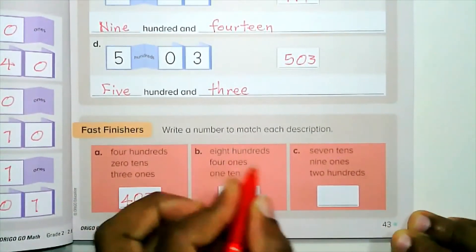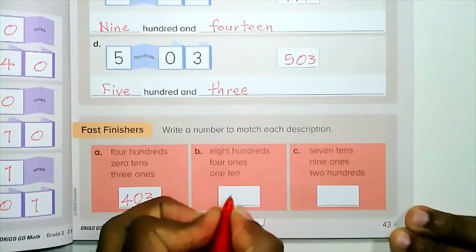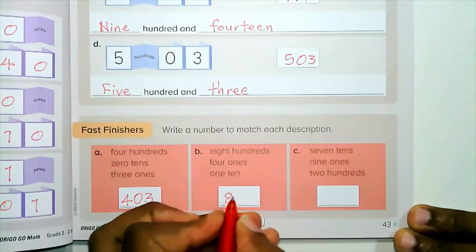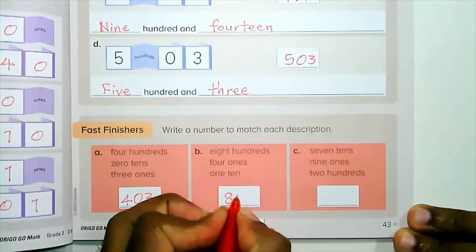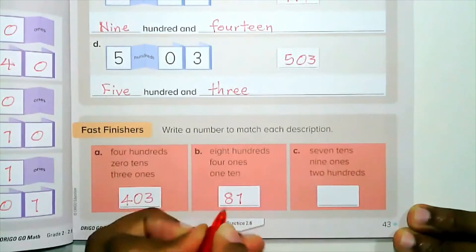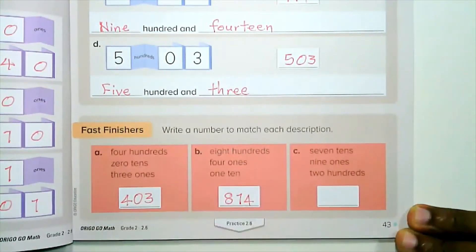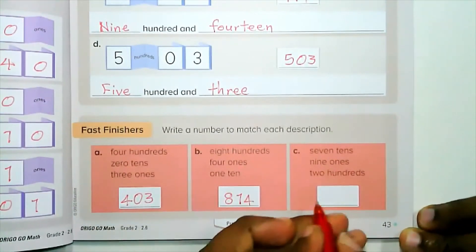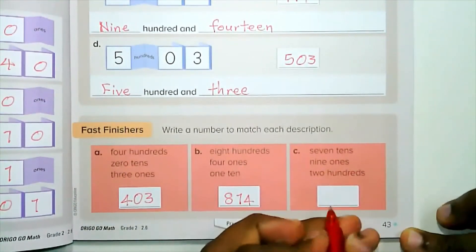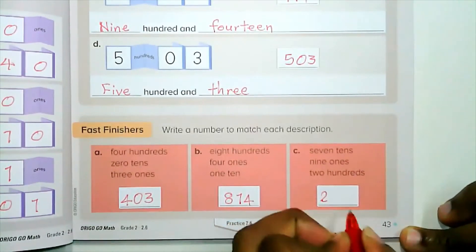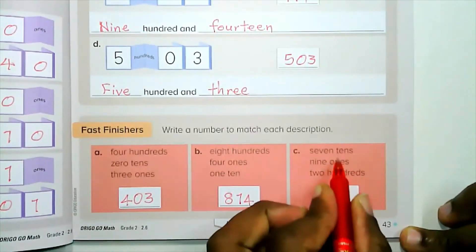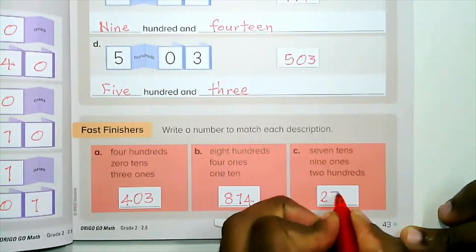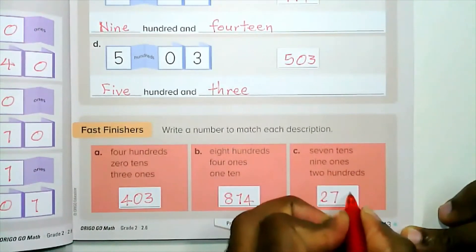Part B: eight hundreds, one ten, four ones — the ten comes first, so we write eight hundred and fourteen. Part C: two hundreds come first, followed by seven tens and nine ones — two hundred and seventy-nine.